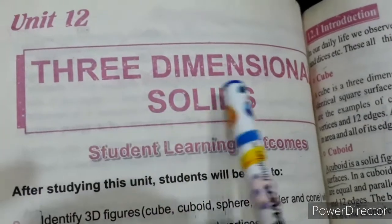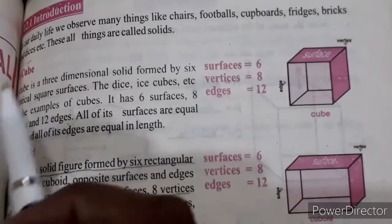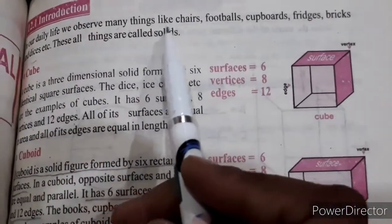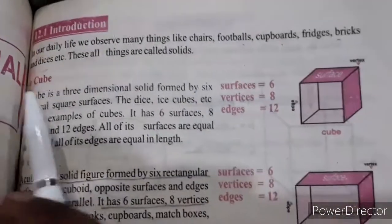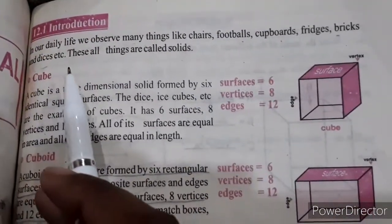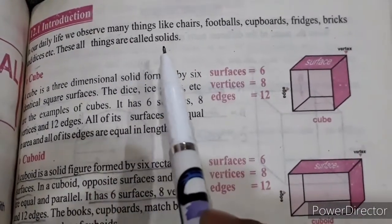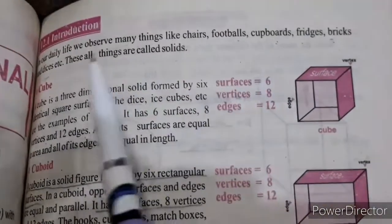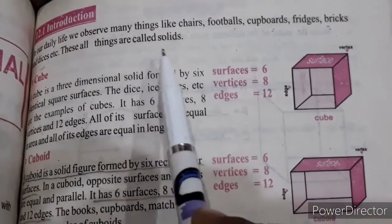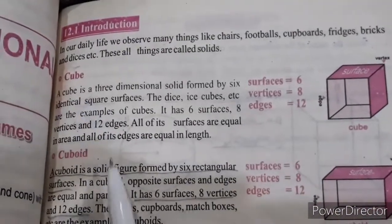You should know what solids are. In our daily life we observe many things like chairs, footballs, cupboards, fridges, bricks, and dices. All these things are called solids — any hard object like these is a solid.